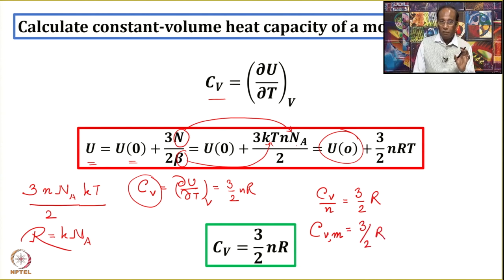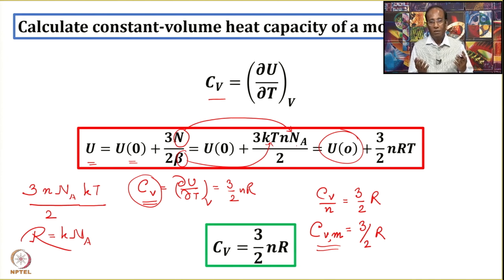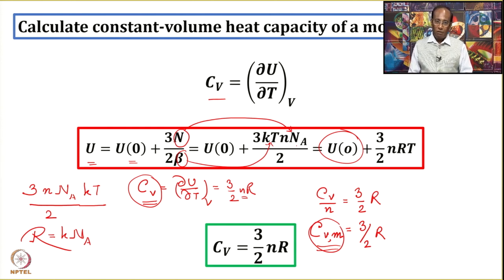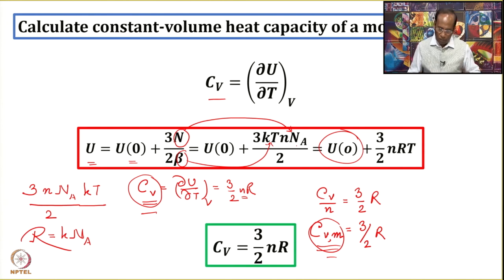We should always distinguish between Cv and Cv,m. Cv depends upon the size of the system — how many grams or moles — because it involves N. When you talk about the molar property Cv,m, it does not depend upon the size because you are determining heat capacity for 1 mole of a substance. Do not get confused when you come across the terms Cv and Cv,m. Since we are talking about heat capacity here, it makes sense to discuss how to experimentally measure it.